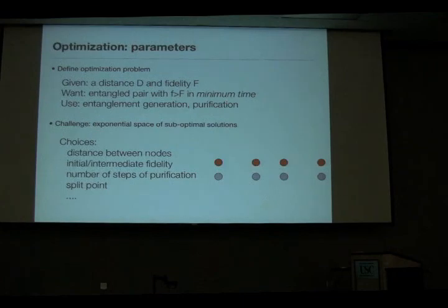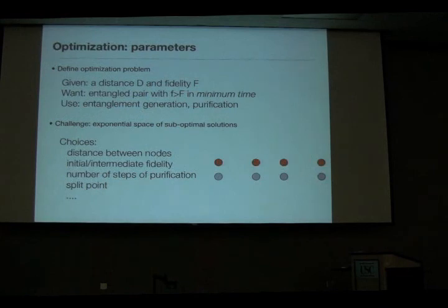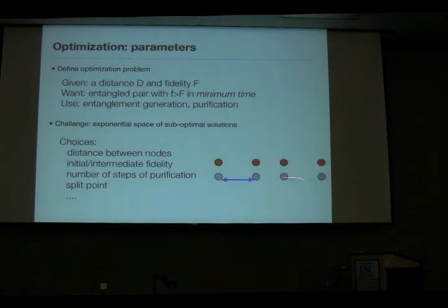The challenge is that there's an exponential space of suboptimal solutions to the problem. I can choose to entangle and connect arbitrary pairs at increasing distances, with a variety of choices between distances, initial and intermediate fidelities, purification stages, number of purification steps, and where to split pairs when the distance isn't exactly halveable. The beauty of this exponential space is that maybe a computer can solve it. We can even restrict the space further. The point is I can use different fidelity pairs to connect things, and I'd like to understand how the different procedures for purification can be optimized.